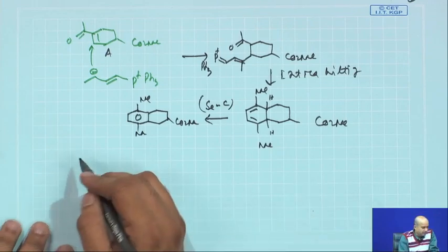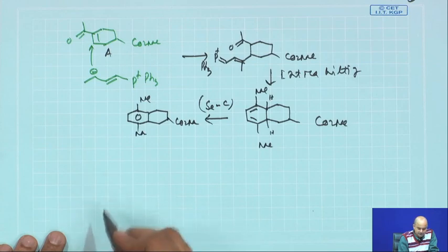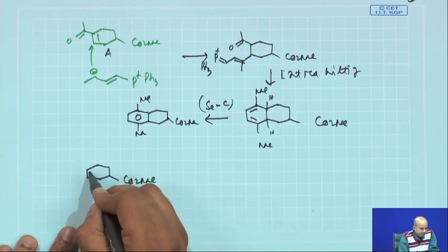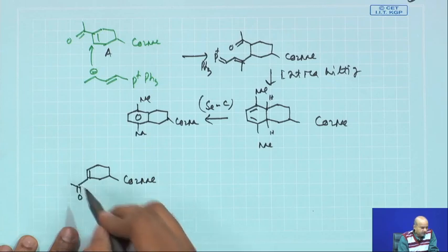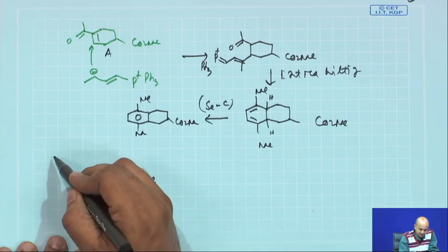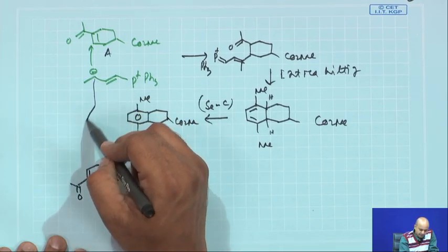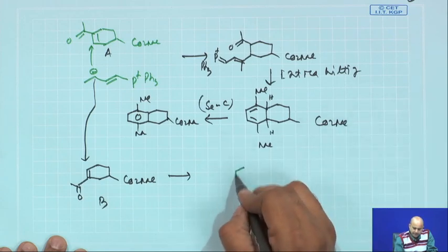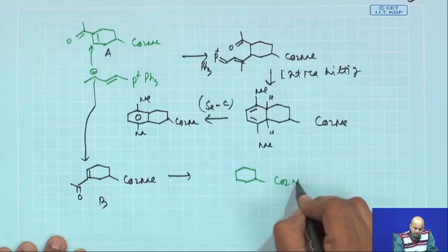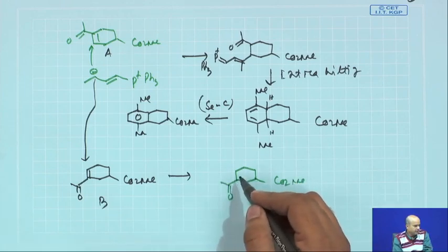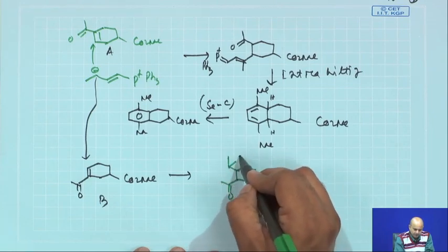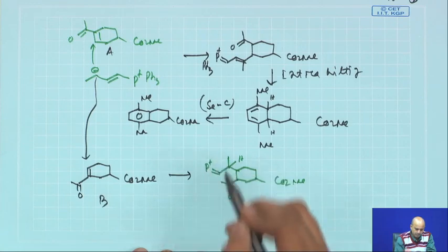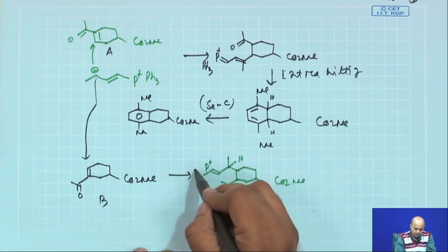Now take the other starting material, intermediate B. The structure of B is the regioisomer of compound A. The same intermediate attacks in the Michael fashion. This is now B — intermediate attacks in Michael fashion — this CO₂Me is here, this CO₂Me is here. If it attacks in Michael fashion, you have this with Ph₃P⁺ and PPh₃.